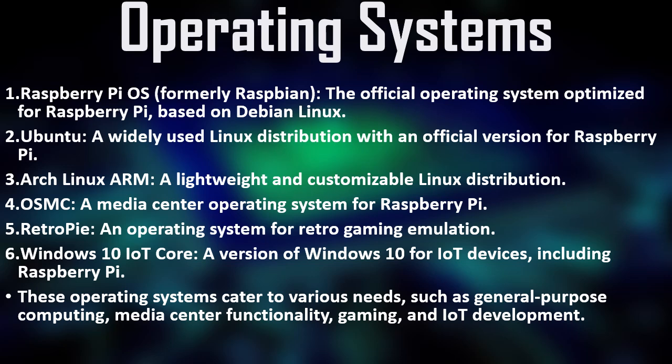The operating systems available for Raspberry Pi include: Raspberry Pi OS, the official operating system optimized for Raspberry Pi based on Debian Linux; Ubuntu, a widely used Linux distribution with an official version for Raspberry Pi; Arch Linux ARM, a lightweight and customizable Linux distribution; OSMC (Open Source Media Center), a media center OS; RetroPie, an OS for retro gaming emulation; and Windows 10 IoT Core, a version of Windows 10 for IoT devices including Raspberry Pi. These operating systems cater to various needs such as general-purpose computing, media center functionality, gaming, and IoT development.